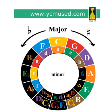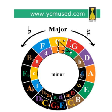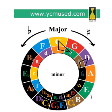Like the major root position triads, minor root position triads can be shown using the circle of fifths as well. Remember that from A to C is a minor third. From A to E is our fifth, so the A minor root position triad would be A, C, and E. Using that same pattern, the B minor root position triad would be B, D, and F sharp. The F minor root position triad would be F, A-flat, and C.